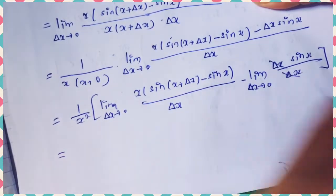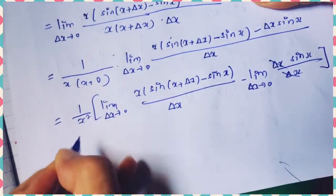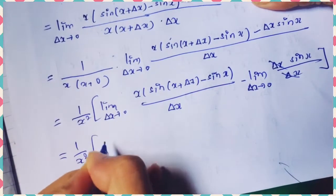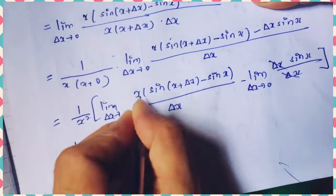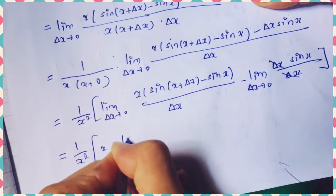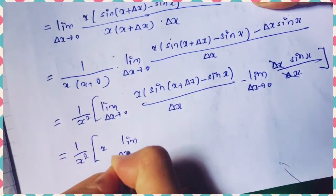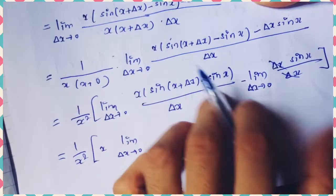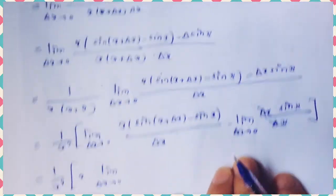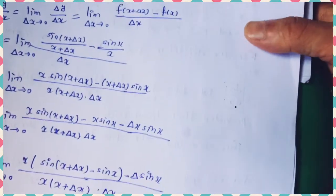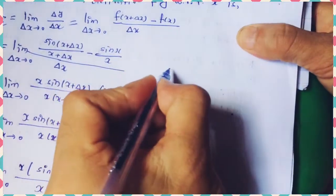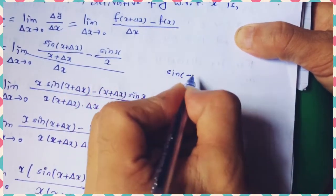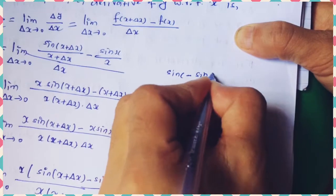Separating the two terms: the first term is lim(δx→0) x·[sin(x + δx) − sin(x)] / δx, and the second term is lim(δx→0) δx·sin(x) / δx, where δx cancels out leaving sin(x).